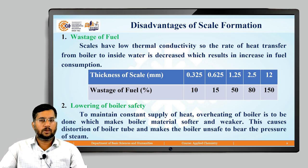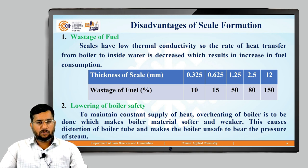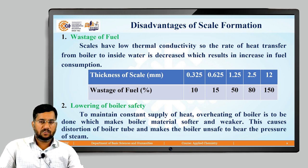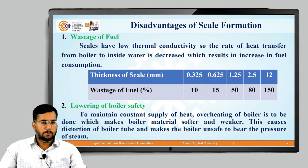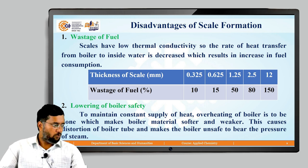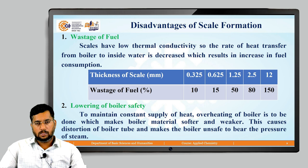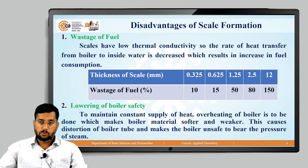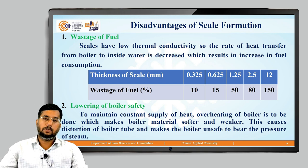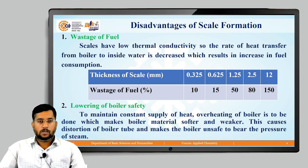A table illustrates the relationship between scale thickness and fuel wastage: a scale thickness of 0.325 mm causes 10% fuel wastage; 0.625 mm causes 15% wastage; 1.25 mm causes 15% wastage; 2.5 mm causes 80% wastage; and even 12 mm thickness results in 150% fuel wastage. This shows how severely scale decreases boiler efficiency.